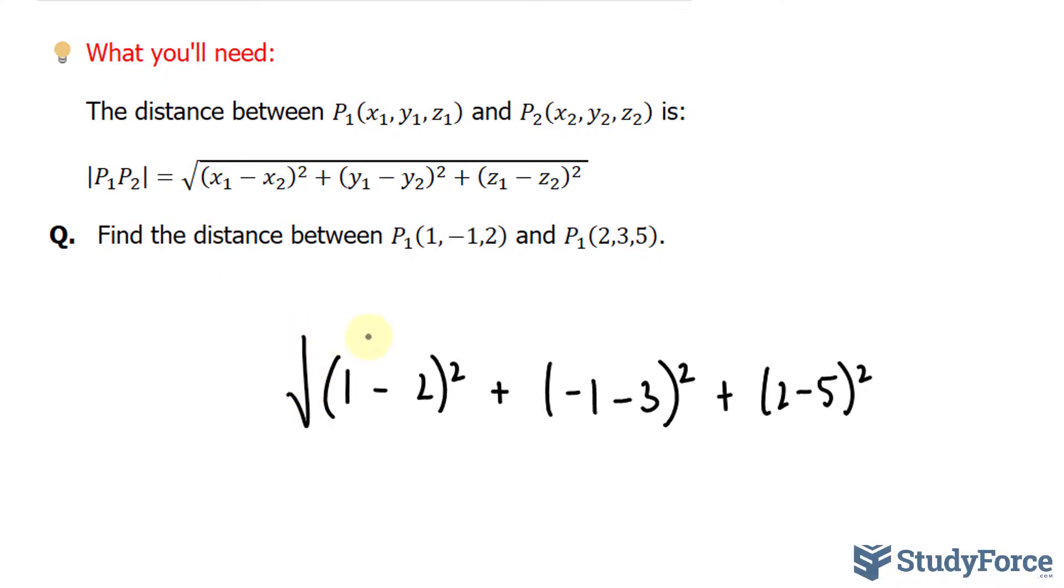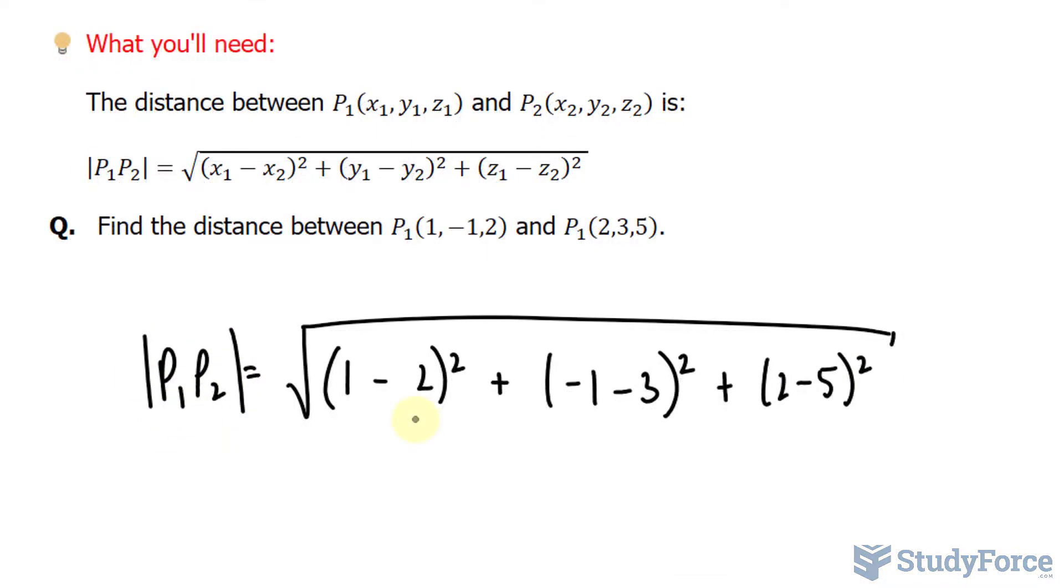If we square root this whole thing, you should end up with the distance or the magnitude between the two points if they were a vector. Let's calculate this quickly. 1 minus 2 is negative 1 raised to the power of 2 plus negative 4 raised to the power of 2 plus negative 3 raised to the power of 2.